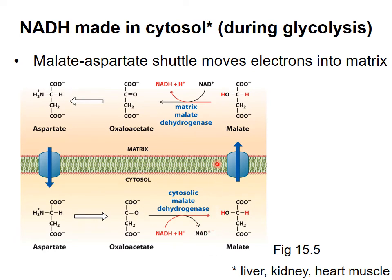The NAD+ produced in the conversion of oxaloacetate to malate goes back to glycolysis. The NADH produced in the conversion of malate to oxaloacetate in the matrix is able to transfer its electrons to complex 1, and ultimately to oxygen. So NADH is not directly moved across the membrane, but its electrons are. You do not need to memorize the details of the malate-aspartate shuttle — just understand in principle how electrons from glycolysis make their way to NADH in the matrix for use in the electron transport chain.